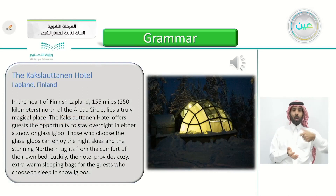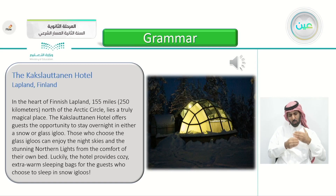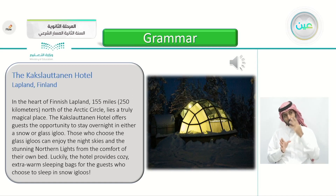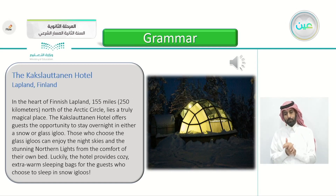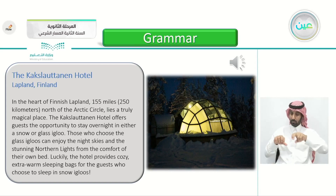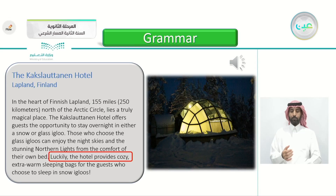The last article: The Kakslautenen Hotel, Lapland, Finland. 'In the heart of Finnish Lapland, 155 miles (250 kilometers) north of the Arctic Circle, lies a truly magical place. The Kakslautenen Hotel offers guests the opportunity to stay overnight in either a snow or glass igloo. Those who choose the glass igloos can enjoy the night skies and the stunning northern lights from the comfort of their own bed. Luckily, the hotel provides cozy, extra warm sleeping bags for guests who choose to sleep in snow igloos.' The example here is 'luckily' — from the word luck, meaning fortunately. The hotel provides warm sleeping bags if you want to sleep in the snow igloo.